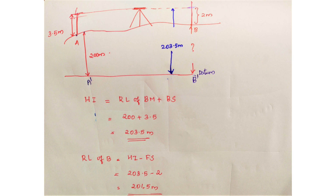The height of the instrument is reduced level of the benchmark plus the backside reading. The height of the instrument is the line of sight. That is 200 plus 3.5 meters. At B, we have a foresight of 2 meters, giving us the reduced level of B.